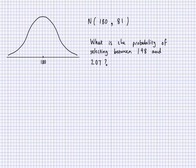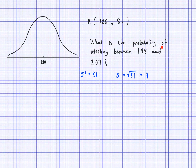Here is an example of finding a probability using the normal distribution. This is N(180, 81) — mean 180 and variance 81. Therefore the standard deviation is the square root of 81, which is 9. We want to find the probability of selecting between 198 and 207. In context, think of this as the height of adult males in centimetres, with a mean of 180 cm.